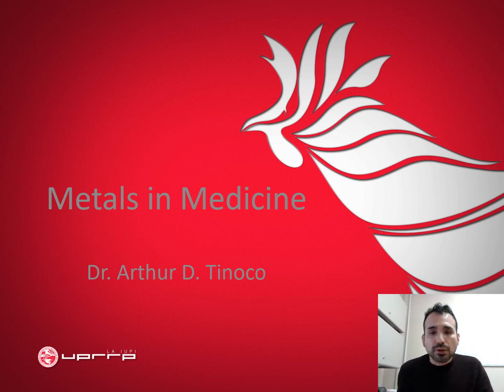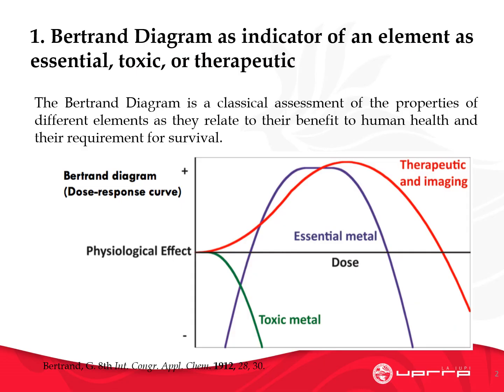I want to draw your attention to this particular diagram. To gain a perspective on the importance of elements to human survival, let us focus on the Bertran diagram as it categorizes elements into the categories of essential, toxic, or therapeutic. This diagram is a classical assessment of the properties of different elements as they relate to their benefit to human health and potential survival.